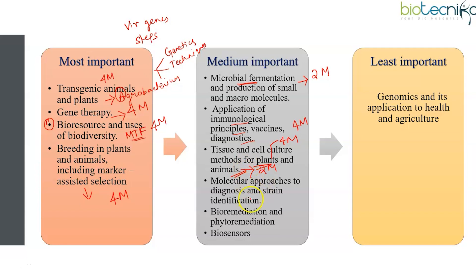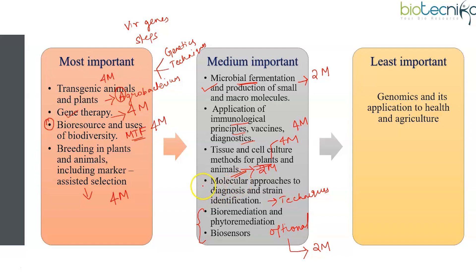Molecular approaches to diagnosis and strain identification, as mentioned earlier, is related to techniques and may be asked in combination with some other topic. Bioremediation, phytoremediation, and biosensors are optional kinds of topics, and even when asked, they usually come in the form of two marks. These medium important topics are asked on a rotational basis — for example, if they ask from fermentation, they may skip gene therapy; if they ask from molecular approaches, they may skip molecular markers. These topics are not asked every time.